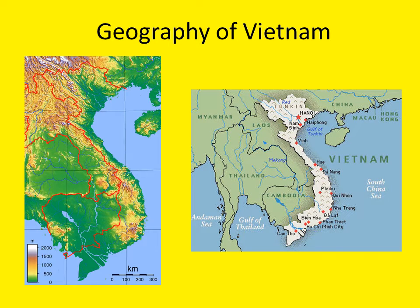In this short lecture, we will be examining the physical geography of Vietnam and will be considering the ways in which the environment and the landscape of Vietnam have influenced the history of the region. The map on your left is a topographic image of Southeast Asia. Note the mountains in the northern and western parts of the country, which have served to isolate the region somewhat from the rest of Asia.